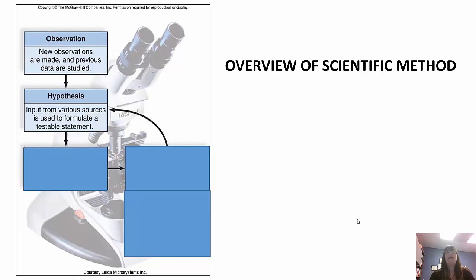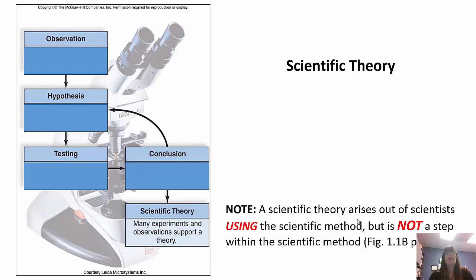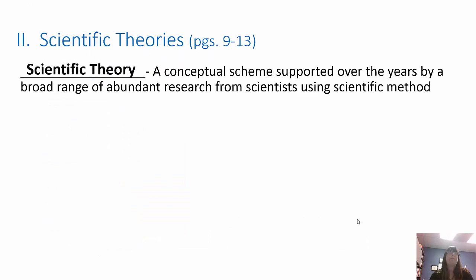To summarize: you make an observation, you form a hypothesis, and then you test your hypothesis. You look at your results, analyze them, and the hypothesis is either supported or rejected. If you use many experiments and observations and they all come back supporting the hypothesis, it may become a theory. A scientific theory arises out of scientists using the scientific method — it's not actually a part of the scientific method itself. After scientists repeatedly support a hypothesis, that hypothesis may become a theory.